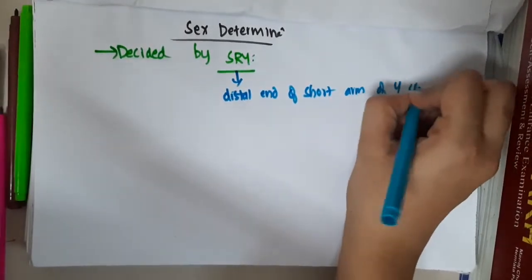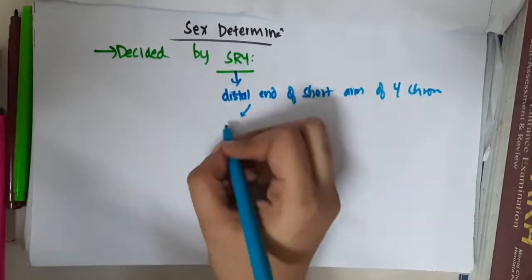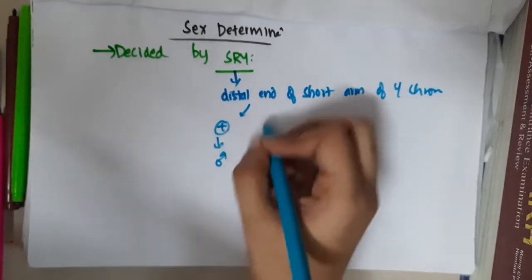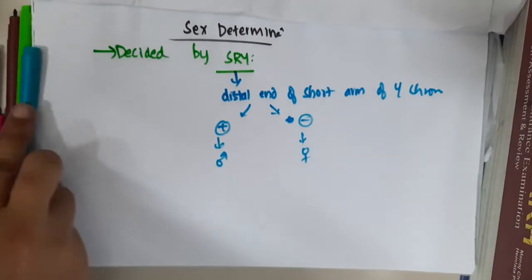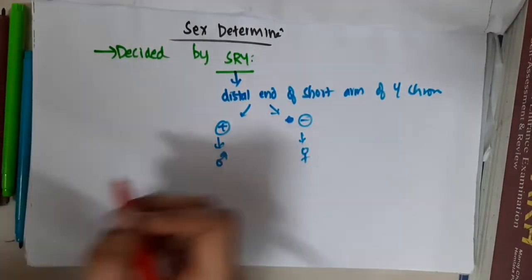If this SRY gene is present, then the baby becomes male. If it is absent, then the baby becomes female. So there is Turner syndrome.